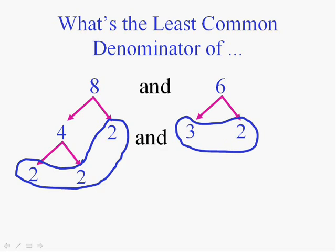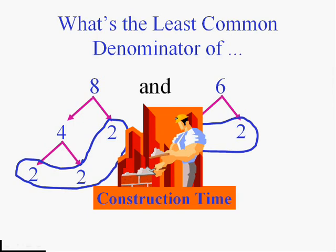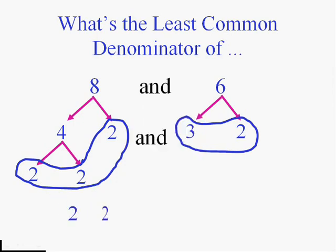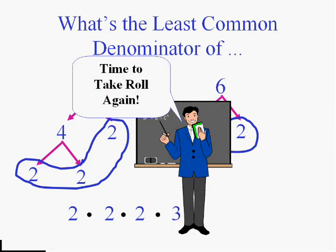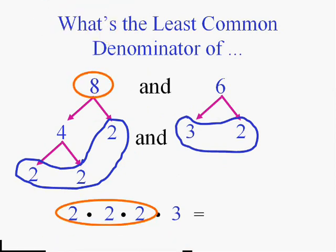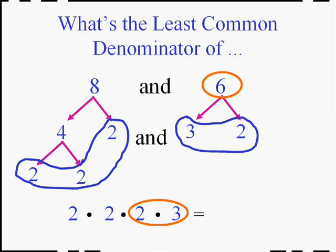Let's construct this LCD. We need to have 8 go into it. So I'm going to need all three 2's for the 8. Now I'm good for the 8. Now I need 6 to go into it. So I need a 3 and I need a 2. But I already have that 2. So I don't need to add another. And these multiply to the answer. Let's take roll to make sure everybody's in there. 8 is in there. 6 is in there. So the answer is 24. And it makes sense. 24 is the smallest number that both 8 and 6 go into. Note that it wasn't just multiplying 8 and 6 and getting 48. 48 is a common multiple but it's not the least common multiple. Hence not the least common denominator.